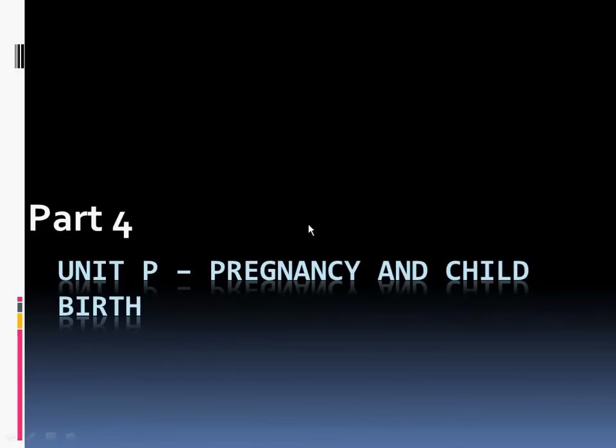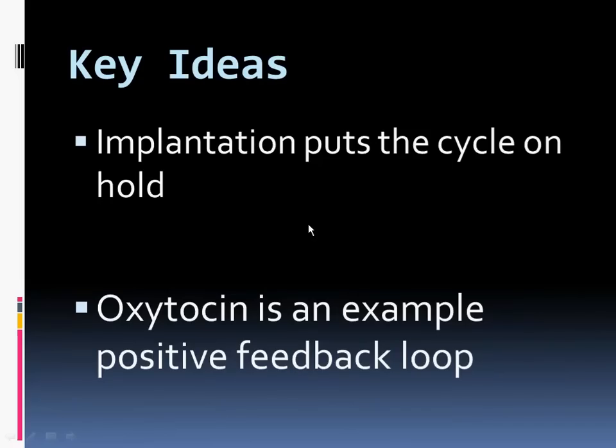Okay, in this section, this is Unit 4, or Part 4, Pregnancy and Childbirth, we're going to be looking at what is going to happen to the female cycle if the woman should get pregnant, if the egg is fertilized and becomes a zygote.